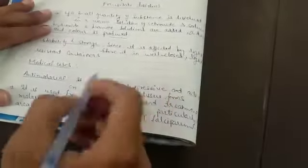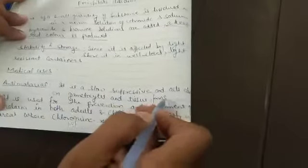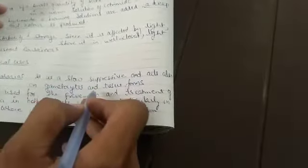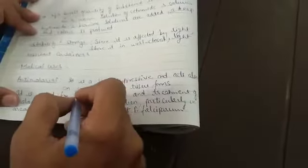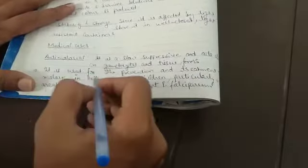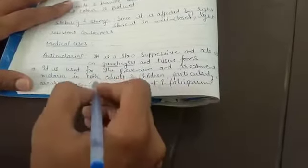Now we need to see some medical uses. Because it is an anti-malarial drug, we will give it in the case of malaria. It has suppressive action and also acts on gametocytes and tissue forms. It is used for prevention and treatment of malaria in both cases.